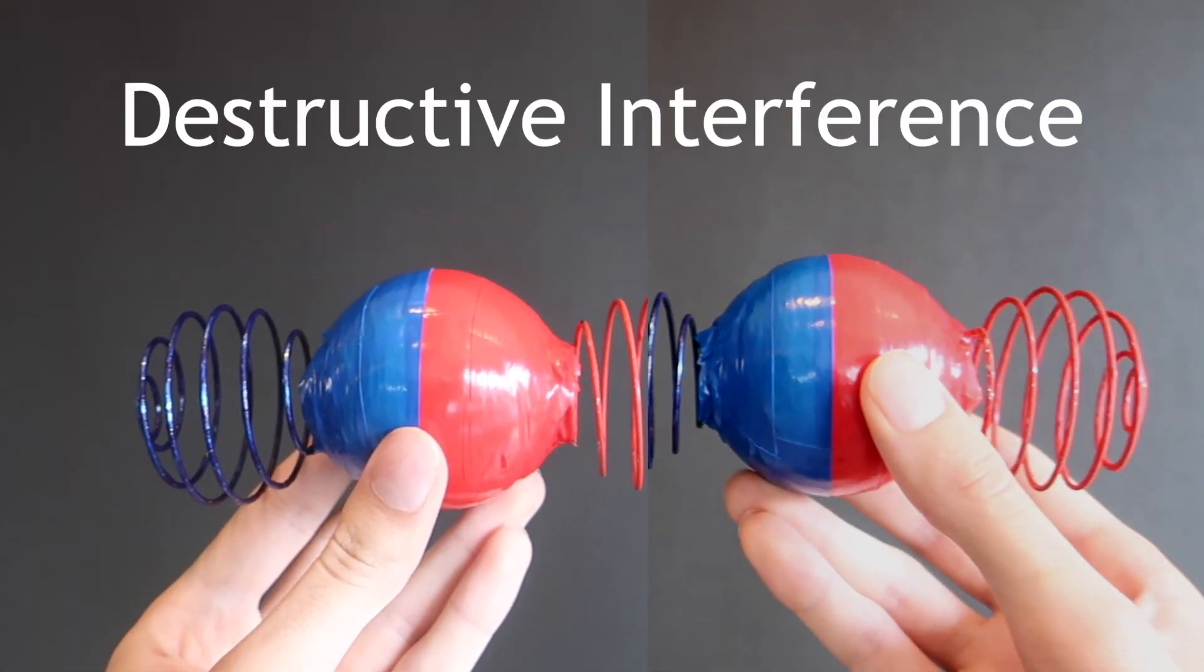But opposite magnetic fields are different. They behave in such a way that when they come near each other, the two fields cancel by destructive interference.